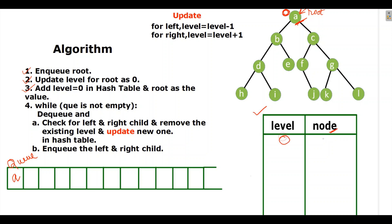Then the third point: at level zero in the hash table, put root as its value. So level zero, I will write A. Then there is a while loop — it will check whether the queue is empty. We have node A in the queue. First step is dequeue: pop A from the queue. Then check for left and right child of A. A has left child B and right child C. B's level, being on the left side, will be minus one. C, being the right child, will be plus one.